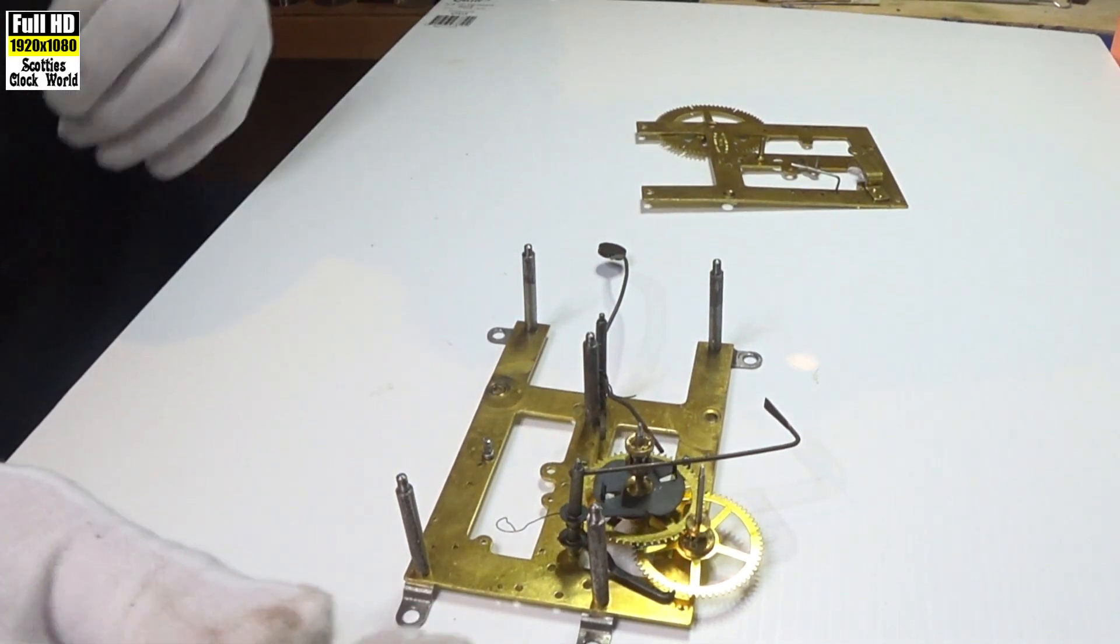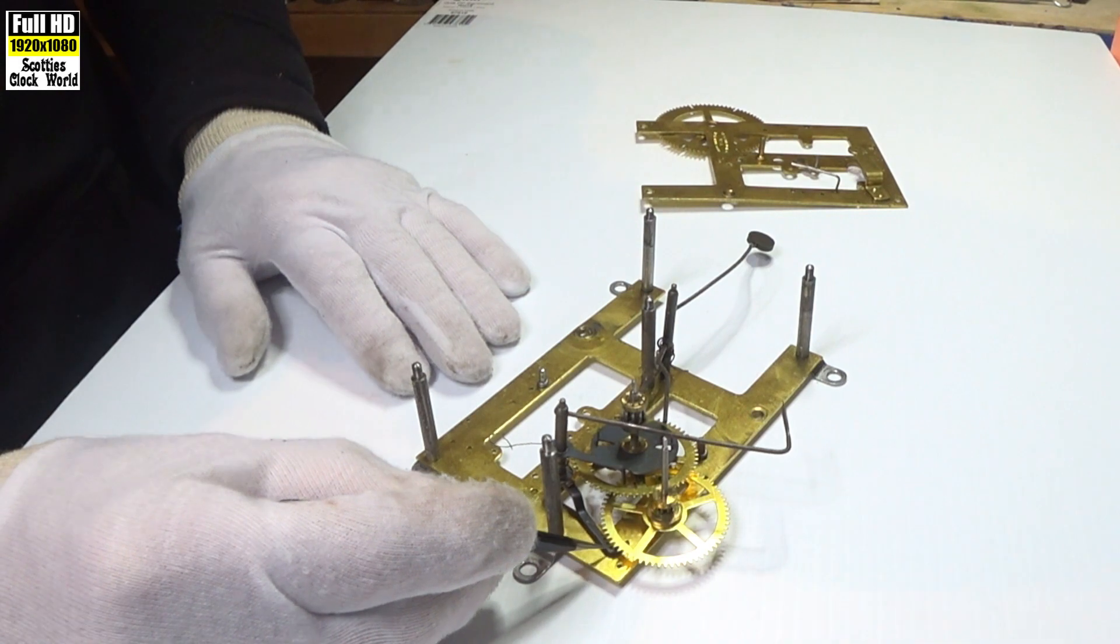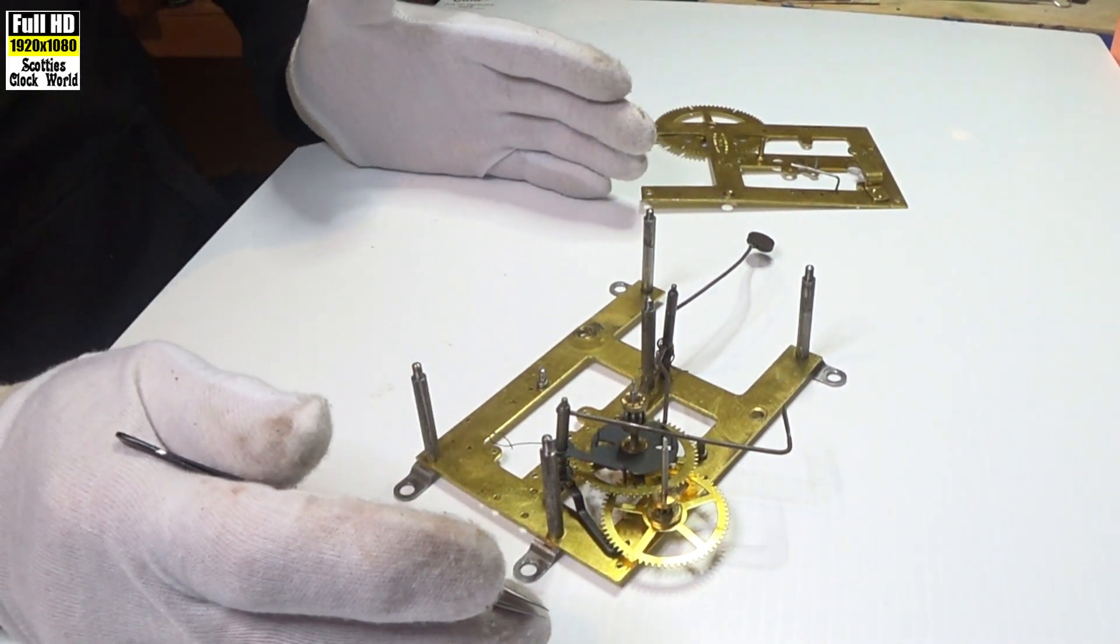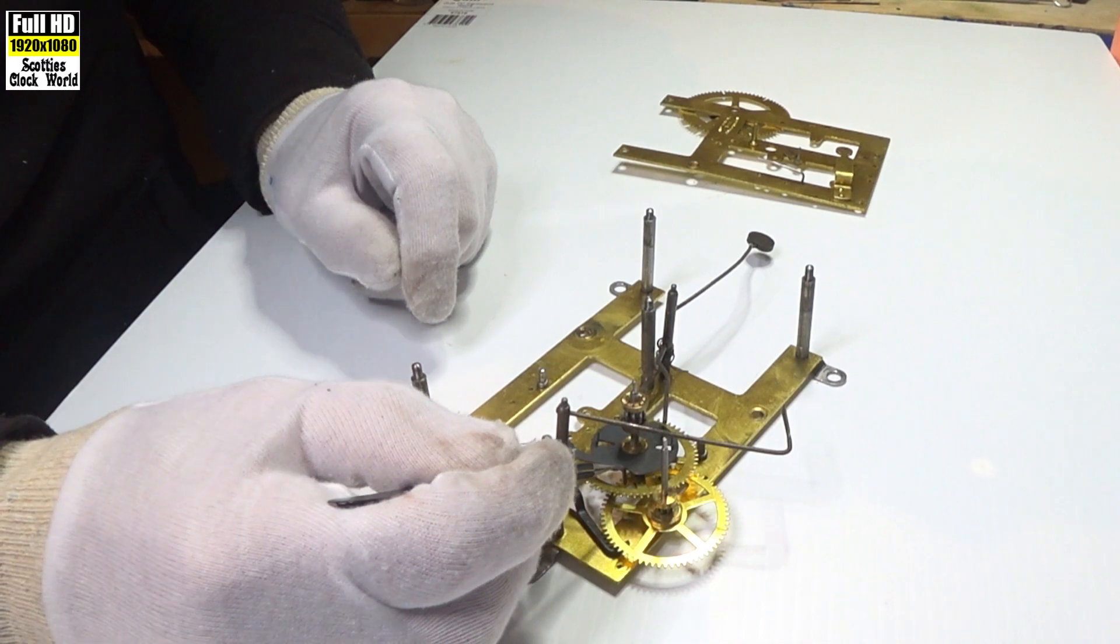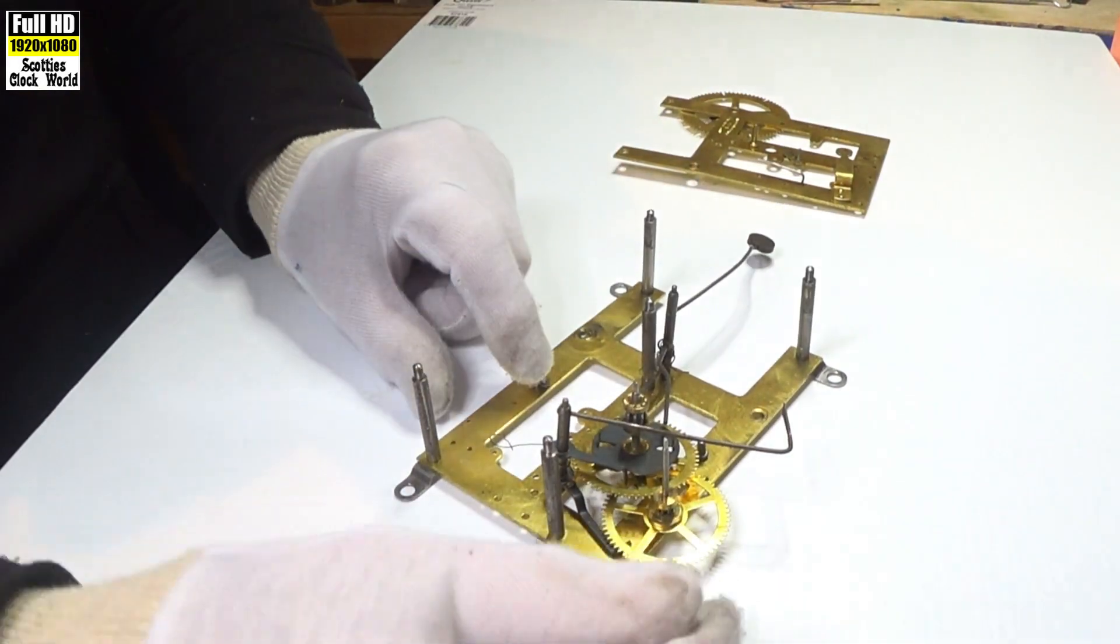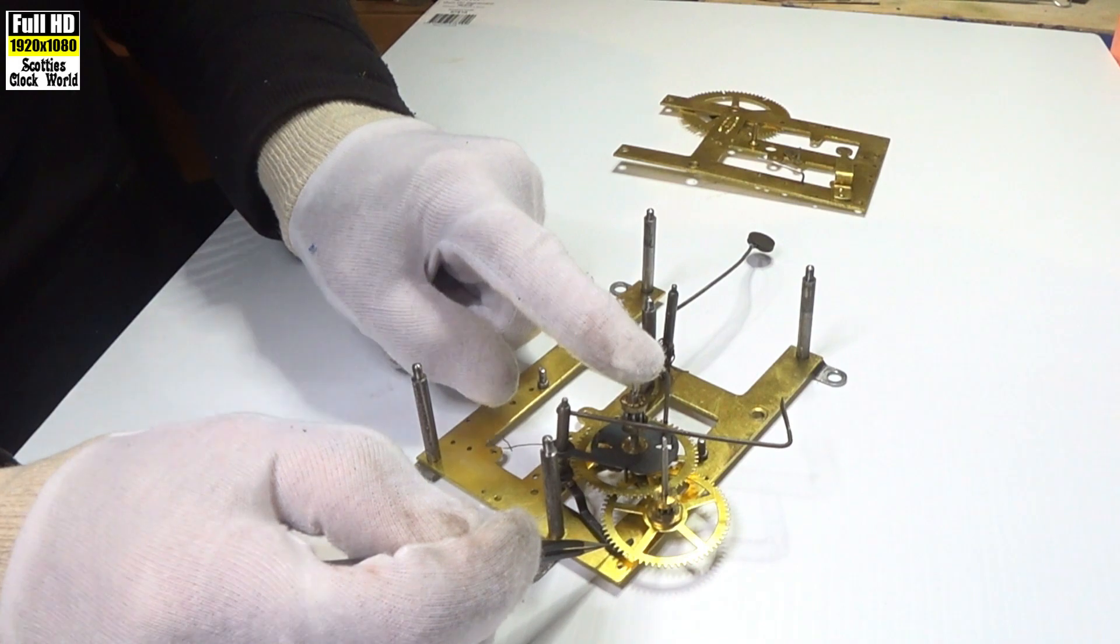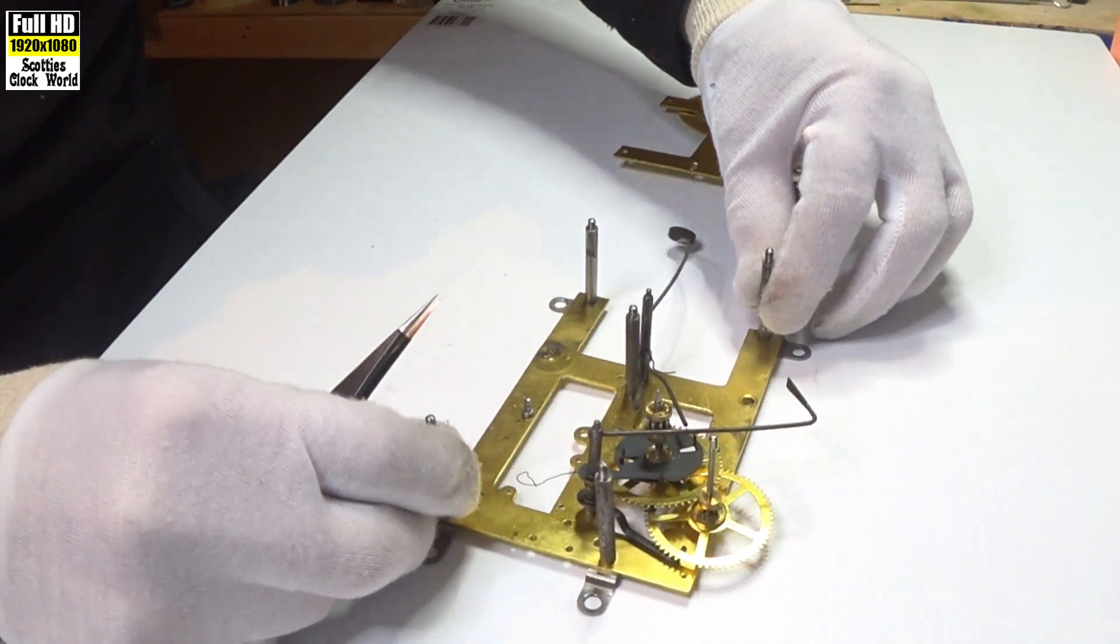The third thing that has to happen is that the warning wheel, the pin on the warning wheel, must be arrested by that third lever there. So normally you don't put the warning wheel in when you're putting your movement together. You check that the count lever is in the deep hole, that that lever there is in the maintenance cam, and then you put the warning wheel in and turn it round a tooth at a time without affecting these other two, so that the pin is caught or arrested by that lever there.